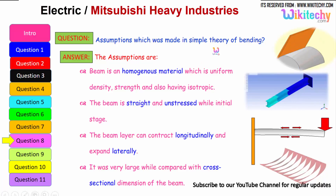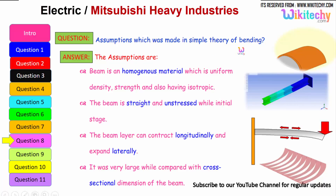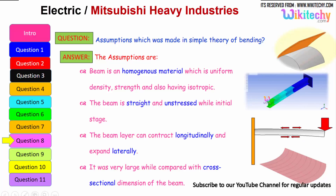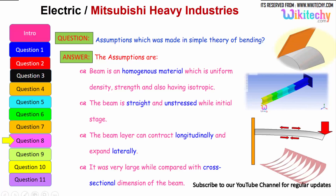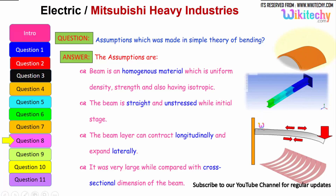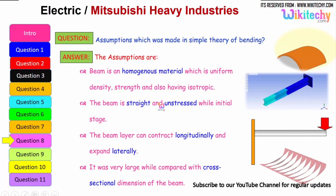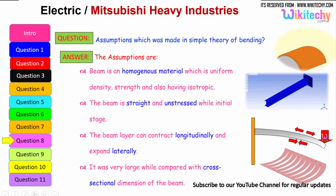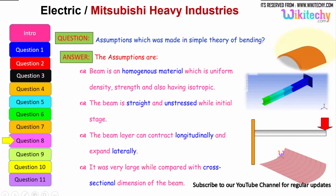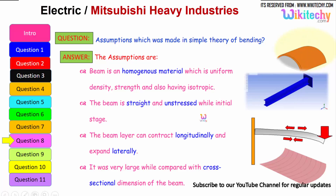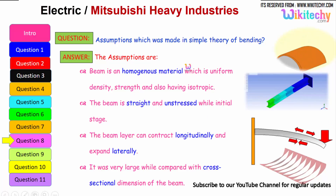What are the assumptions made in the simple theory of bending? The assumptions are: the beam is made of a homogeneous material with uniform density, strength, and is isotropic. The beam is straight and unstressed in its initial stage. The beam can contract longitudinally and expand laterally. The span of the beam must be very large compared with the cross-sectional dimension of the beam. These are some of the assumptions for the theory of bending.